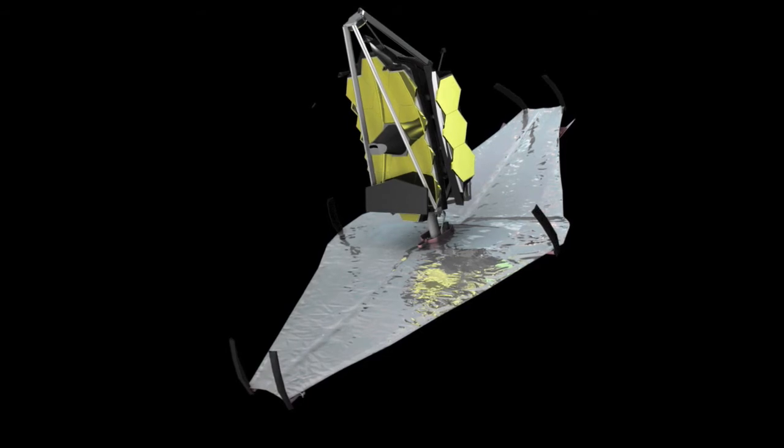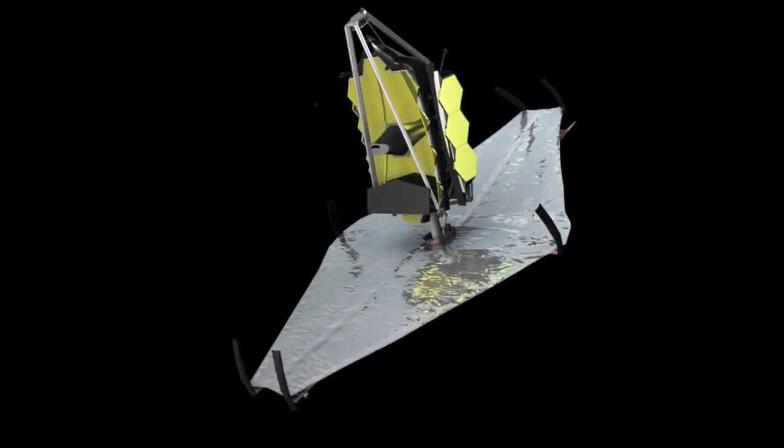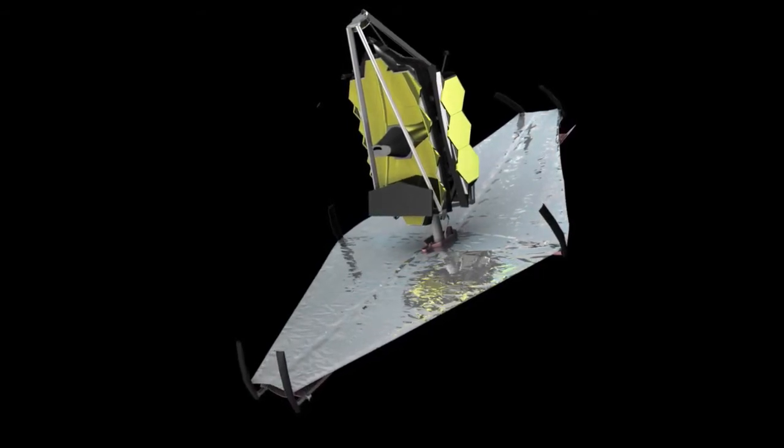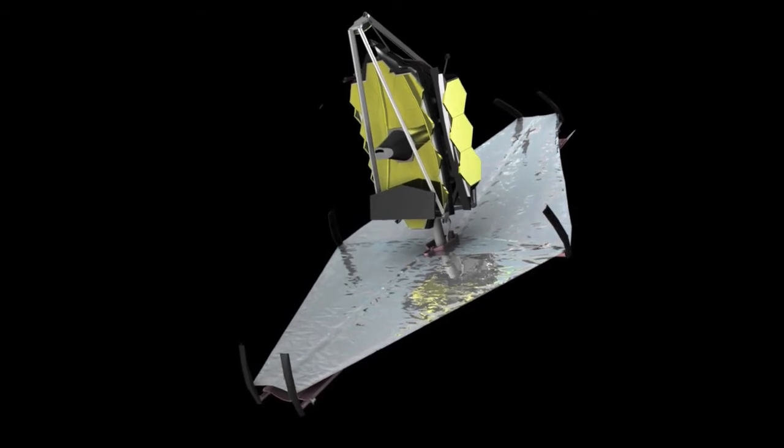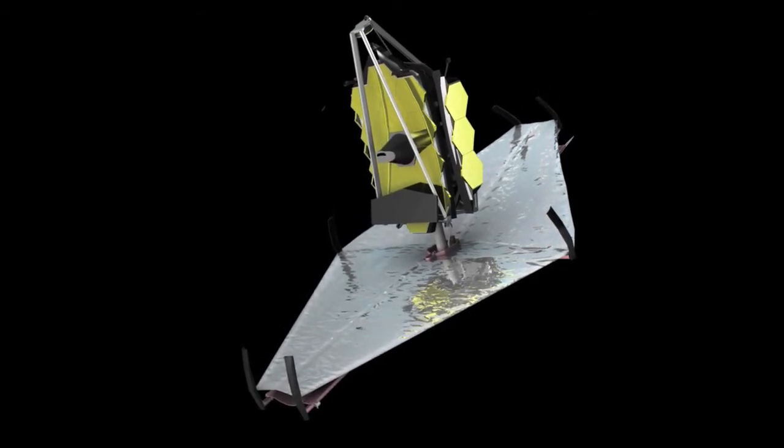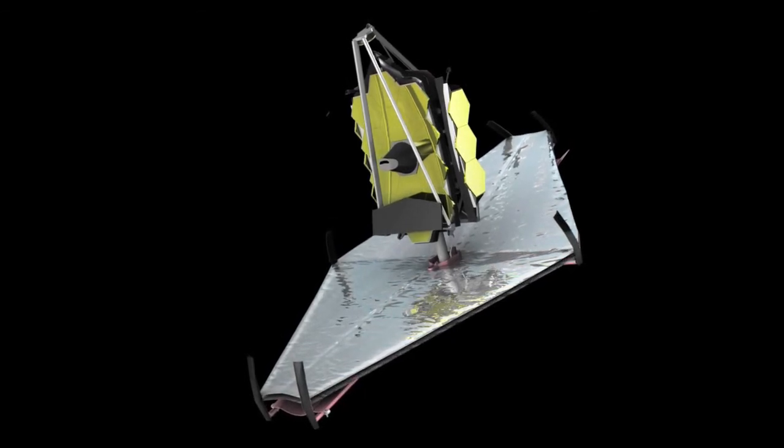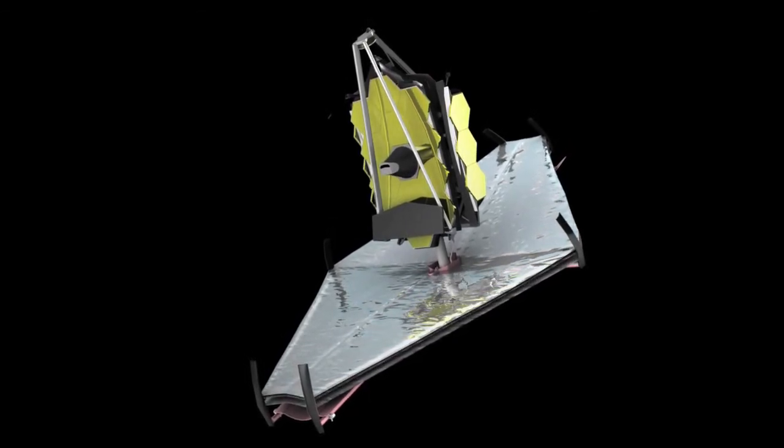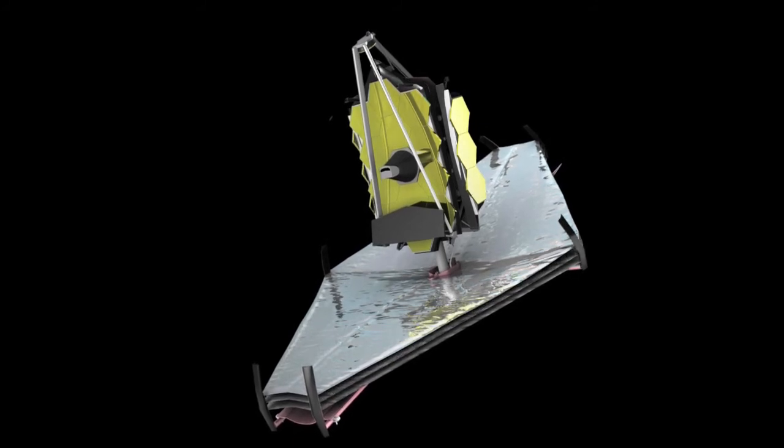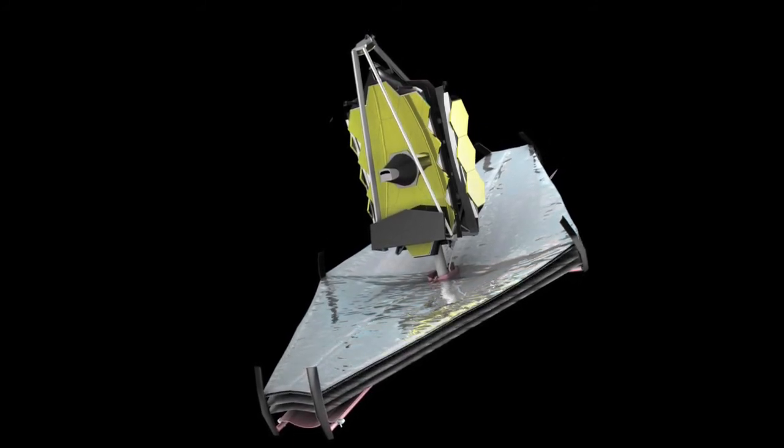The sunshield is made of a polymer-based film, and will have to be covered for the launch. Designed to block out sunlight and to keep the entire telescope operating at 33 Kelvin, the sunshield is multilayered. Once it has been fully opened, it will then separate into five layers.